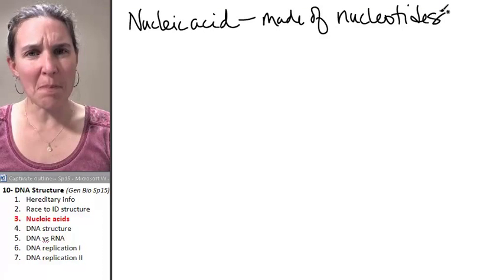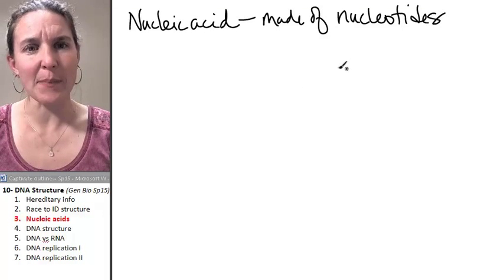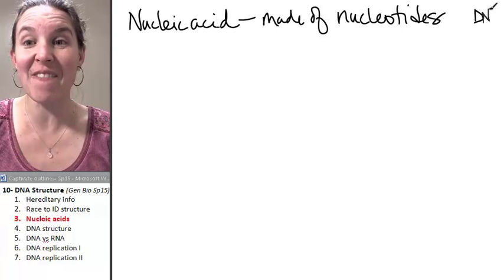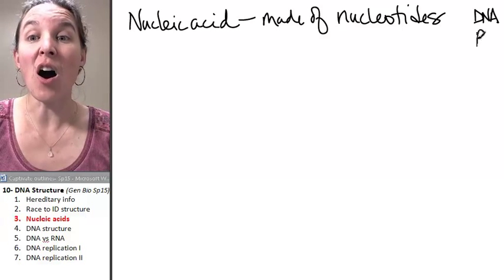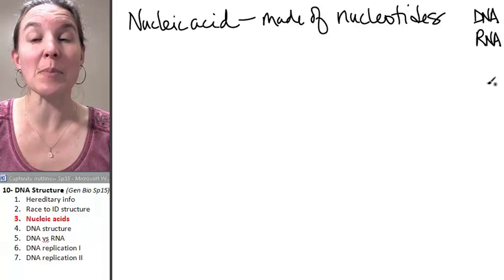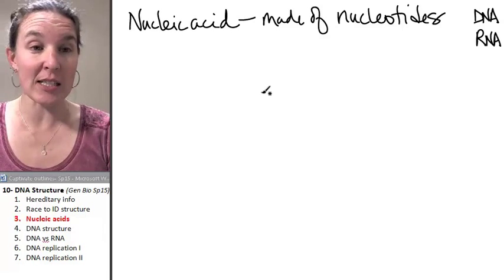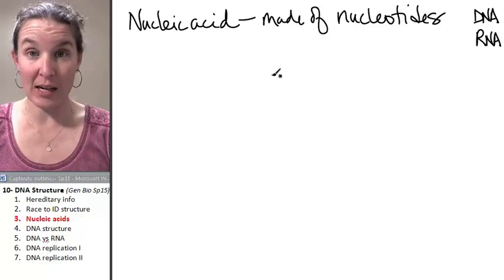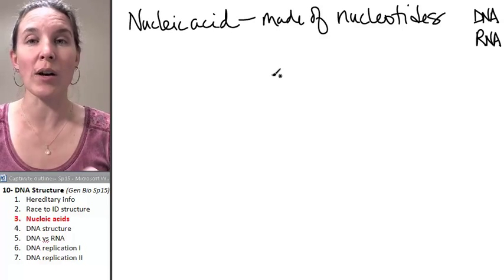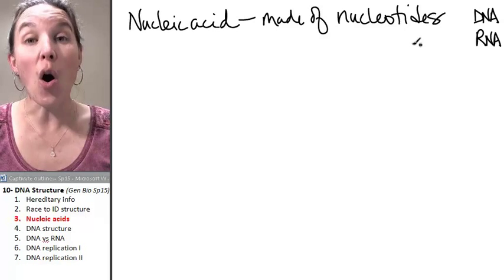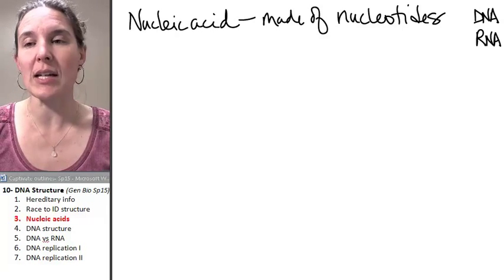There are many different nucleic acids. DNA is an example of a specific nucleic acid. RNA is an example of a specific nucleic acid. And we have different kinds of RNA. That's the category of organic molecule that we're talking about. All of them are made of nucleotides.